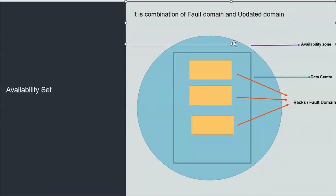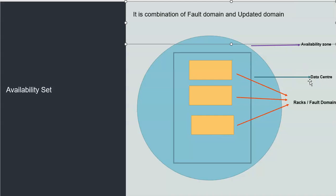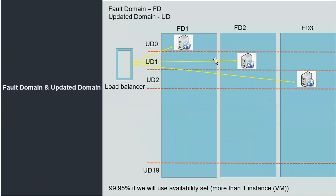For example, in an availability region there is one data center, and inside that data center there are racks. These racks are called fault domains. Different fault domains are available inside the data center. Update domains are arranged horizontally and you can have up to 20 update domains available — from zero to 20 maximum.